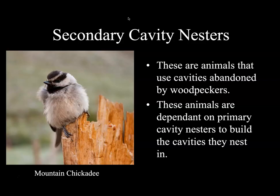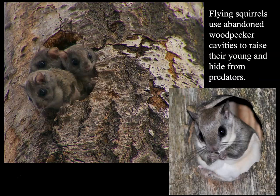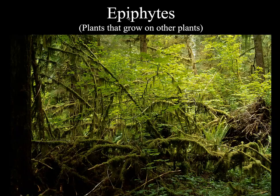The animals that move into abandoned cavities are called secondary cavity nesters. A number of birds are secondary cavity nesters — one example is the mountain chickadee. Other animals that use the abandoned cavities include flying squirrels. So again, the woodpecker, the primary cavity nester, is a keystone species because these animals depend on it to provide homes.